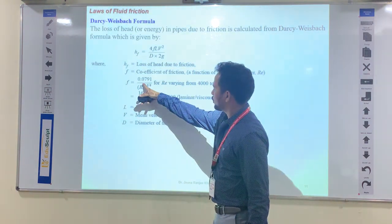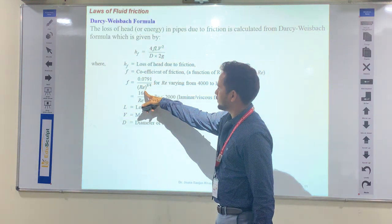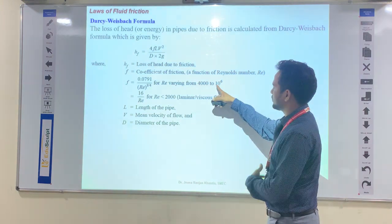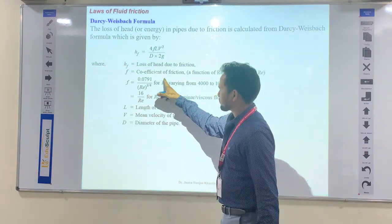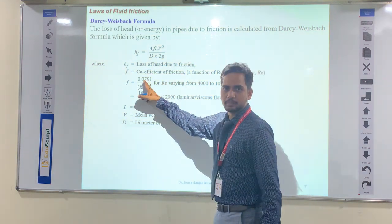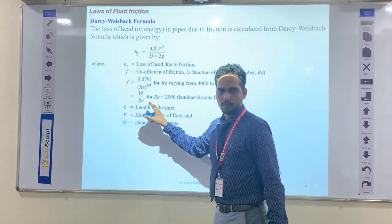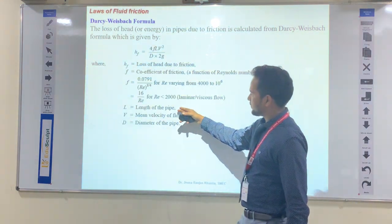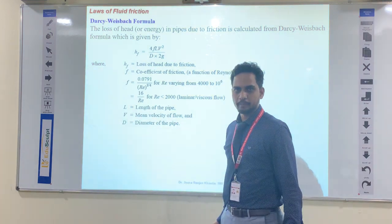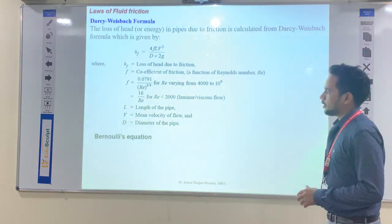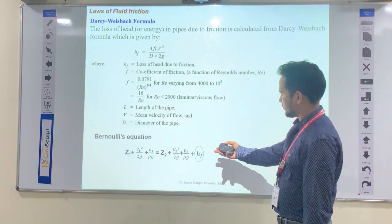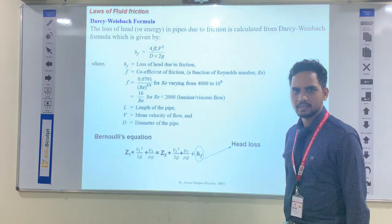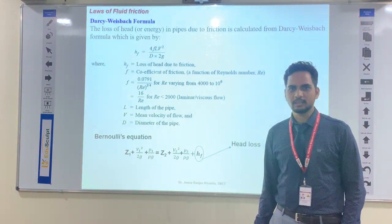To summarize: the friction factor f = 0.0791 / Re^(1/4), valid for Reynolds numbers from 4000 to 10⁶ for turbulent flow. This is purely turbulent fluid. The variables are: L is the length of the pipe, V is the mean velocity, and D is the diameter of the pipe. This is the Bernoulli equation with head loss due to friction. See you in the next class — thanks for attending.